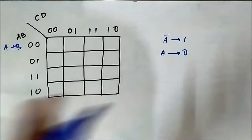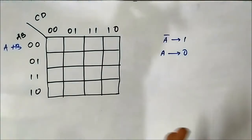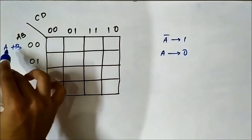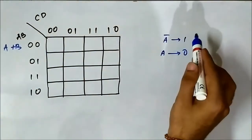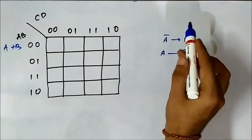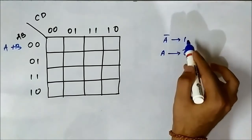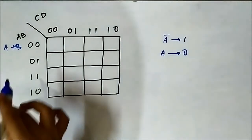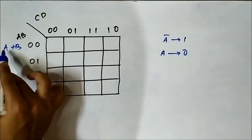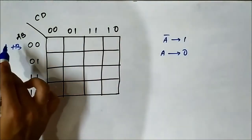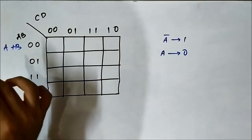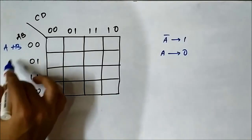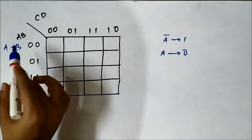As mentioned in the 2 variable and 3 variable KMAP discussions: in POS, uncompleted variables stand for 0. So where it is 0,0, we write A or B — because it is max term representation, POS being product of max terms, or product of sum terms.